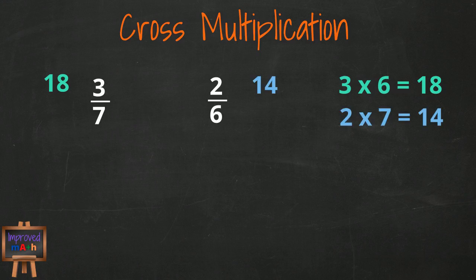Next, we take the numerator of our second fraction, 2, and multiply it by the denominator of the first fraction, 7, to get 14. 18 is greater than 14, so 3 sevenths is greater than 2 sixths.